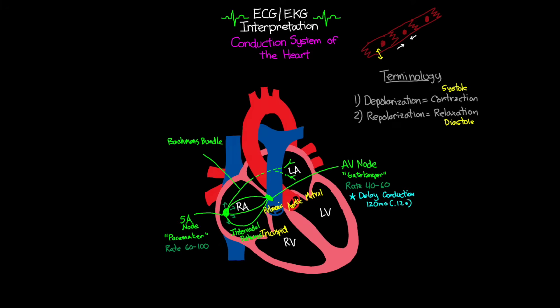This delay is absolutely vital to the functioning of the system. By having this delay, it allows for the full contraction of the atria, as well as the closure of the tricuspid and mitral valves, before sending that signal to the ventricles to contract. This prevents the atria and ventricles from working against each other and keeps blood moving in the right direction — first from the atria to the ventricle, then from the ventricle out to either the lungs or the rest of the body. Without this delay, this flow of blood wouldn't work.